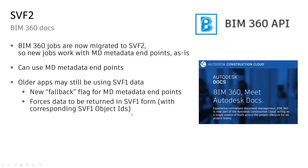The last thing to consider is BIM 360 Docs. BIM 360 Docs jobs are now migrated to SVF2, so new jobs work with Model Derivative metadata endpoints as-is — you're going to get SVF2 metadata, meaning the object IDs will align. However, older apps that may still be using SVF1 data now have a mismatch, because the updated model in BIM 360 is SVF2 and they're relying on SVF1 metadata with object IDs.